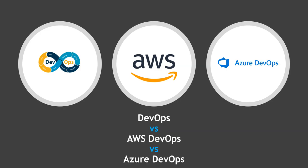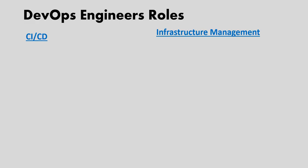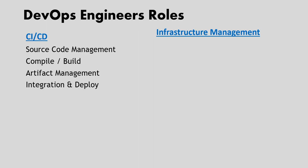To understand this better, first we need to understand what are the roles of a DevOps engineer. A DevOps engineer majorly works in two areas: one is CI/CD — continuous integration and continuous delivery or deployment — and the other is infrastructure management. In CI/CD, he handles the source code, builds or compiles the code, manages the resulting artifacts, and then deploys those artifacts on the target environment.